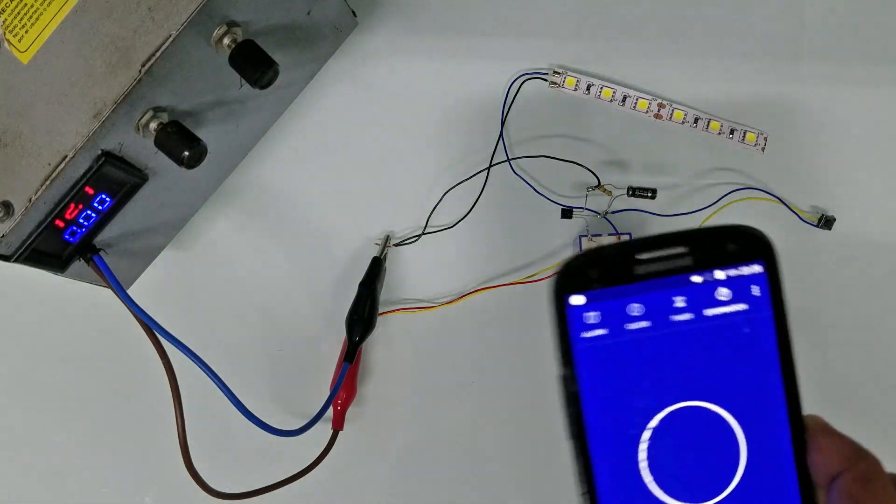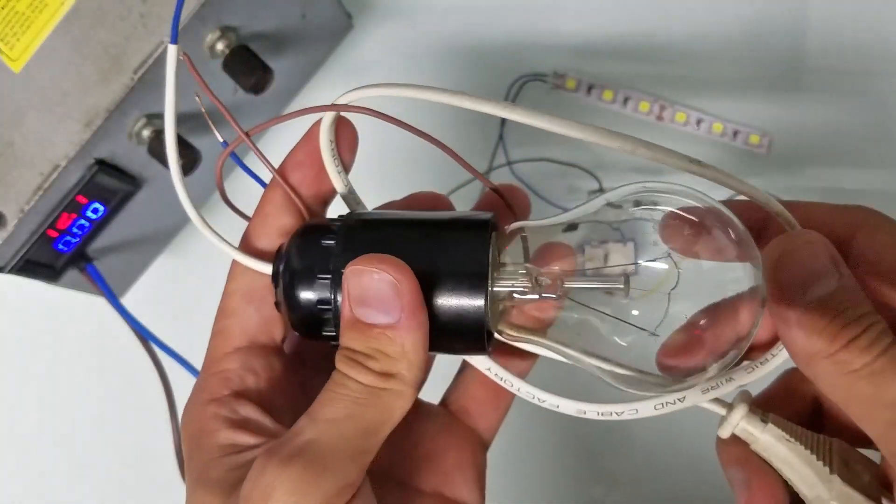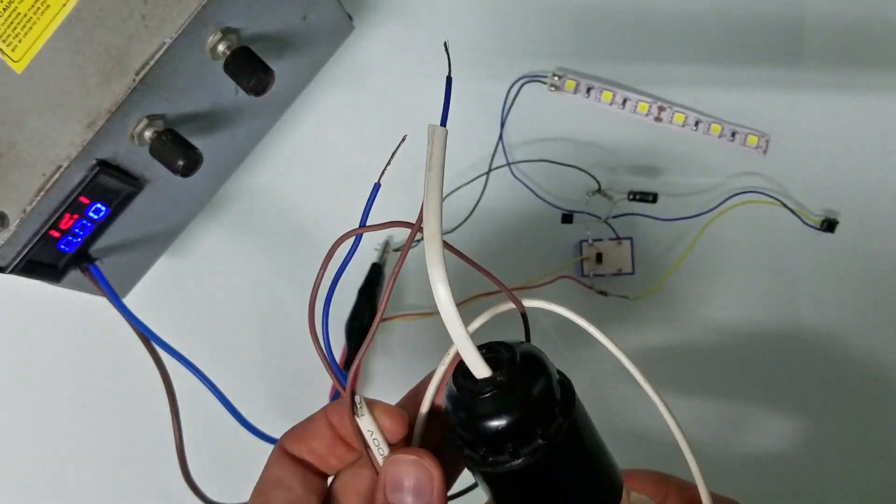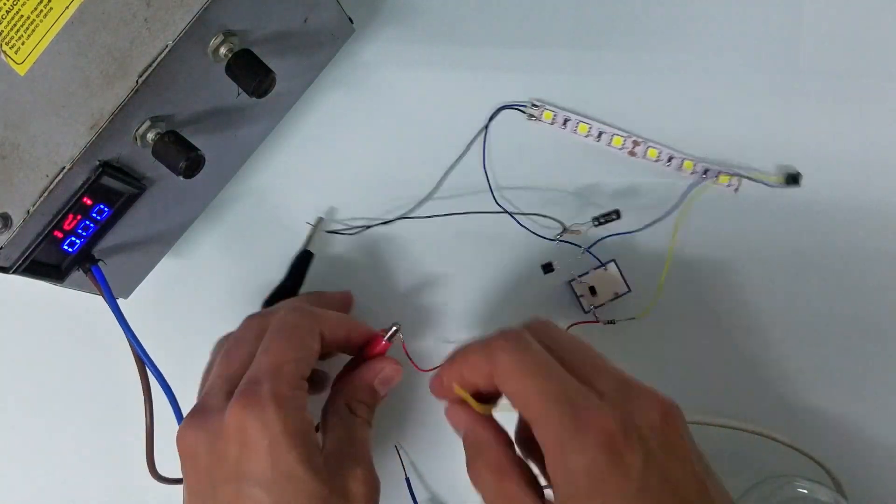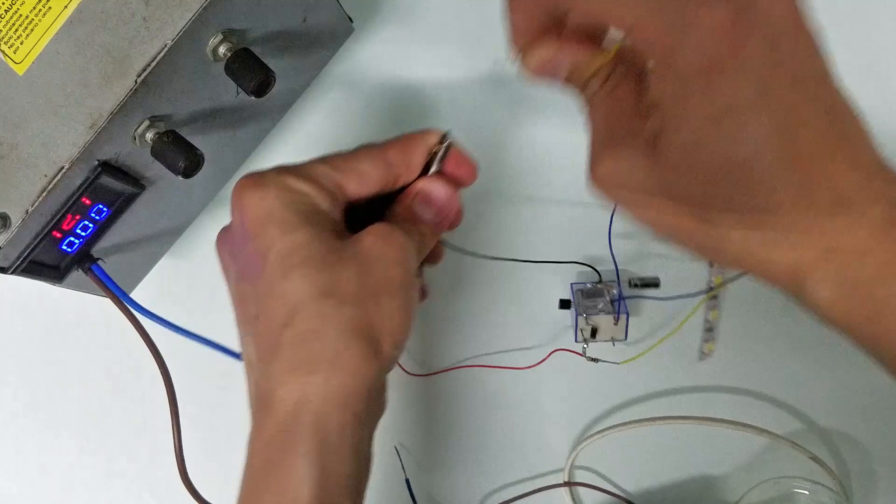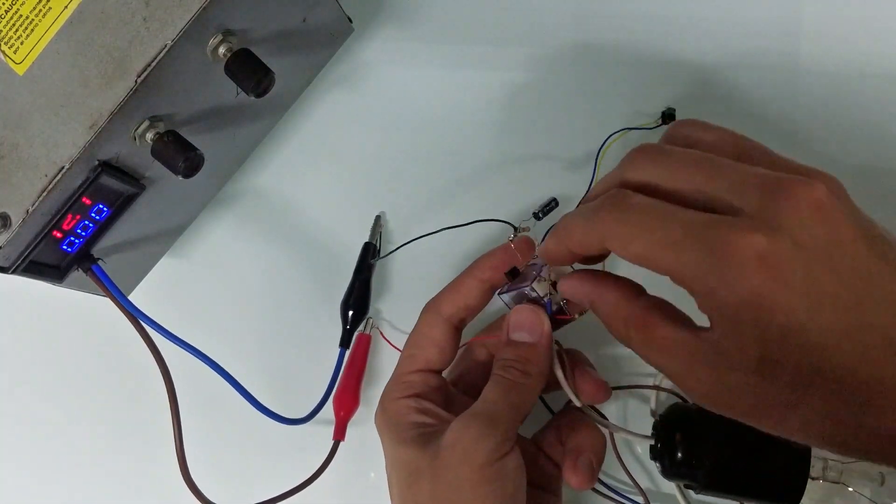The cool thing about using a relay is that you can control almost any device. Now I'm going to connect a 230V light bulb and power it from mains electricity. It is kinda dangerous so I don't recommend trying. I just want to show you that it is possible.